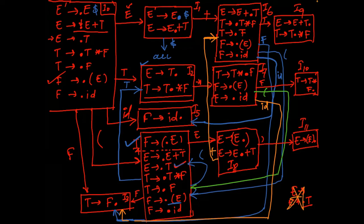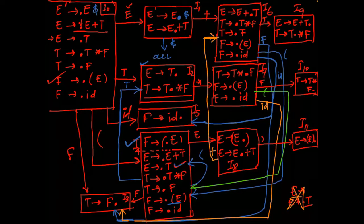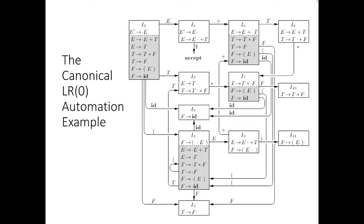We have now created all possible item sets for this grammar. The question is how we use this graph. Two things are involved: the transitions we need to remember, and which items are in which item set. From this, we generate a transition table. The same result matches what is given in the textbook.